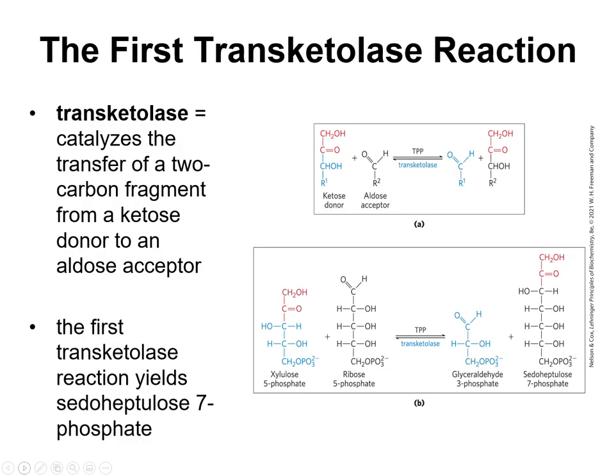Let's talk about the transketolase reaction. It catalyzes the transfer of a 2-carbon fragment from a ketose donor to an aldose acceptor — so transketolase. Sometimes these enzyme names are pretty informative. This enzyme requires TPP, just like we had a decarboxylation that also used TPP. The first reaction you see with transketolase creates a 7-carbon phosphorylated sugar and also yields a glyceraldehyde-3-phosphate.